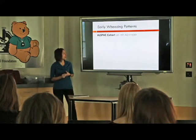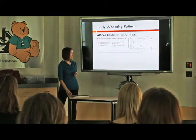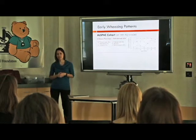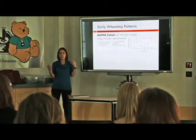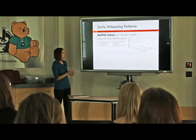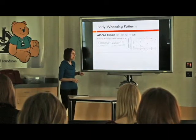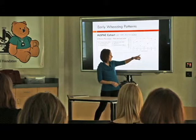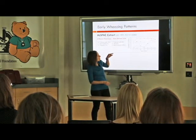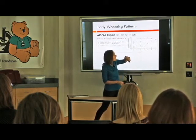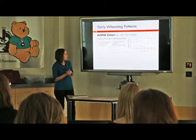A second cohort, called the ALSPAC cohort, is from the United Kingdom — children born in the early 1990s, a larger cohort of about 6,000. In this cohort they used a different method called latent class analysis to classify wheezing phenotypes — data-defined rather than investigator-defined. They let the data classify the children and identified six wheezing phenotypes: never wheezers, transient early wheezers, persistent wheezers, intermediate wheezing, and prolonged wheezing, graphed from six months out to 81 months of age.